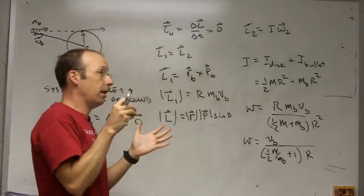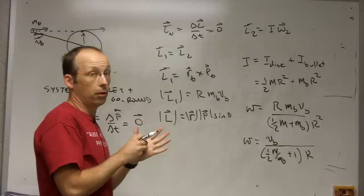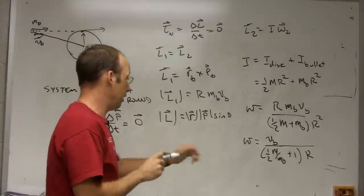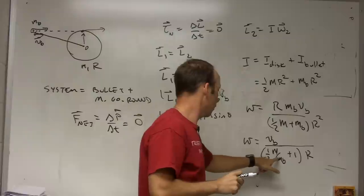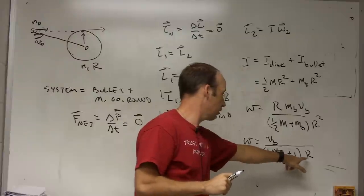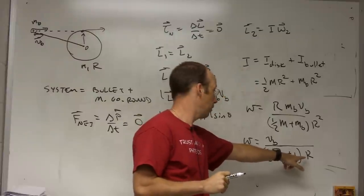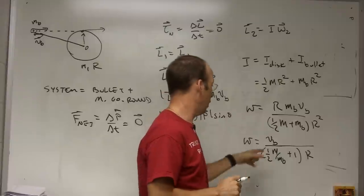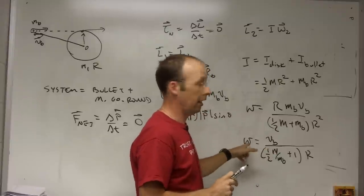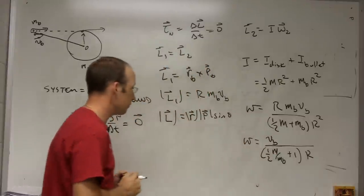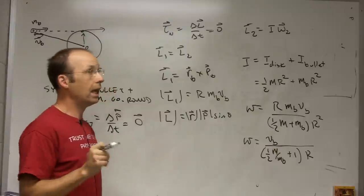What else should I check? What if I, what happens as I increase the mass of the bullet? As I increase the mass of the bullet, this term is going to get smaller and this term is going to get closer to, I'm going to get a higher angular speed. And also if I increase the velocity of the bullet, I'm going to have a higher angular speed.